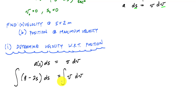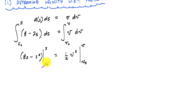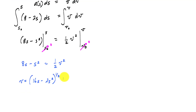We integrate both sides with bounds s₀ to s on the left and v₀ to v on the right. After integrating, we apply our initial conditions: s₀ equals 0 and v₀ equals 0. Substituting these in simplifies the expression, and when we solve for velocity we get our velocity as a function of position with units of meters per second.